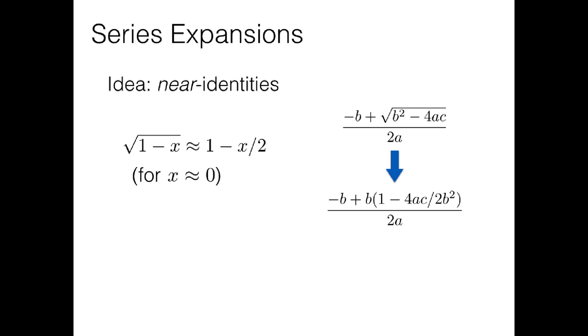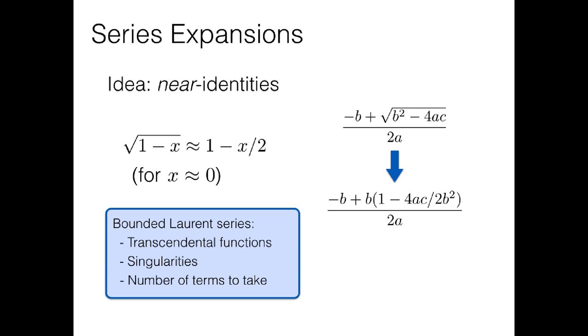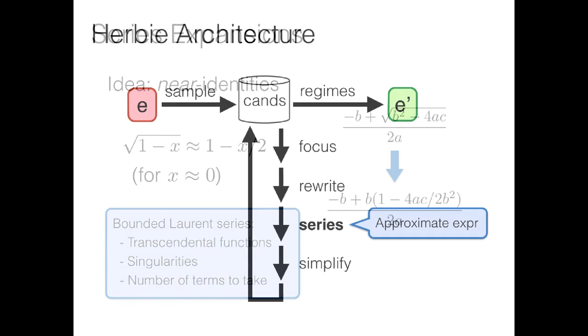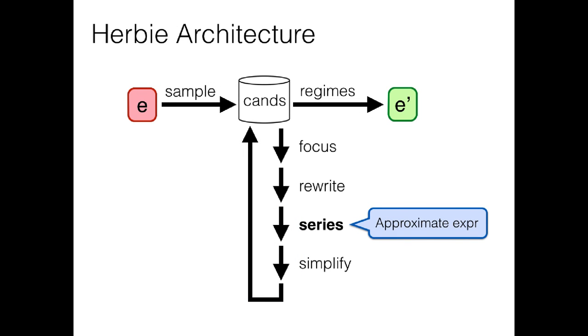We're going to want to generate these near identities automatically, instead of encoding hundreds of them by hand. And in Herbie we do that with bounded Laurent series. These are like the Taylor series we studied in calculus, but they better handle transcendental functions and singularities. Now finally, both of these two steps, rewrite and series, have generated expressions that have a lot of unnecessary junk floating around. And we can clean that up with a simplification pass.